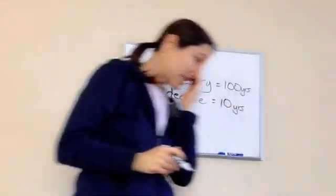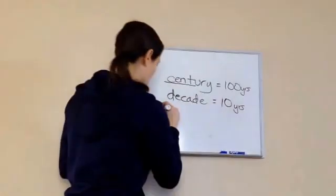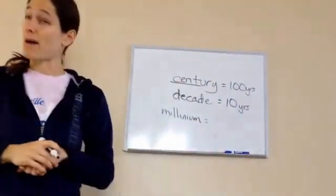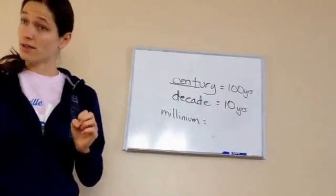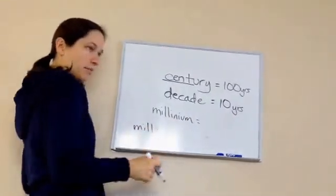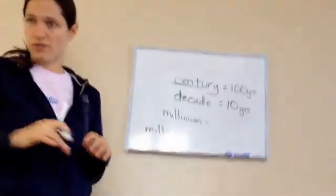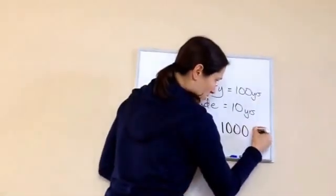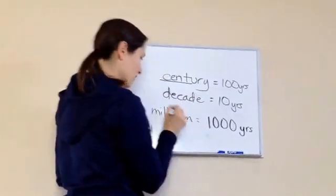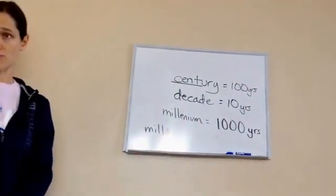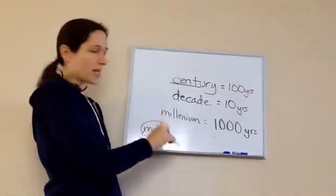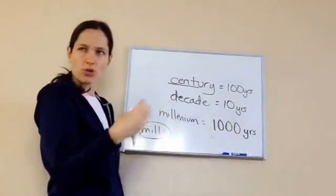Do you know what a millennium is? Kind of a weird word — millennium. Well, if you know anything about 'milli,' like millisecond, millimeter — all those different things — it actually means a thousand years. Millennium equals a thousand years. If you already knew about the 'milli' prefix from millisecond and millimeter, you would know that it equals a thousand. But you'll learn that as you do math later on.